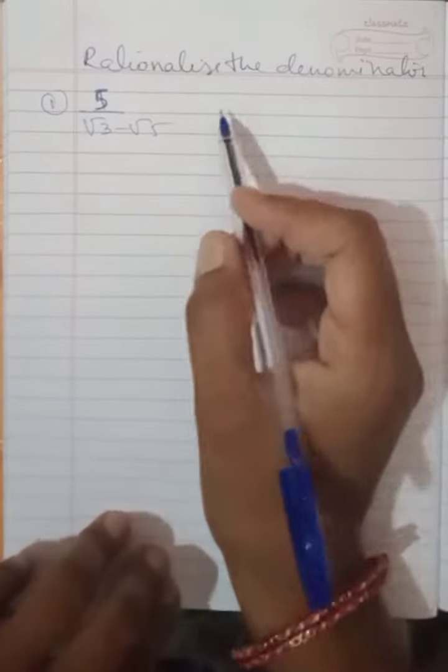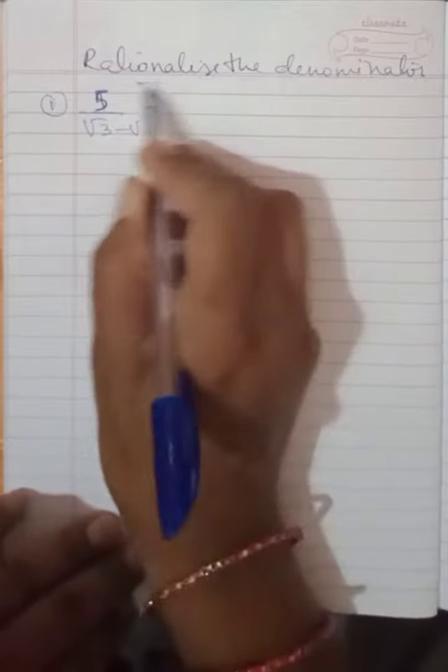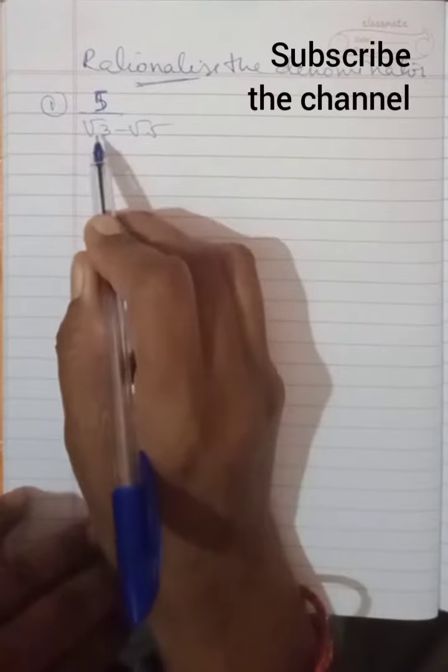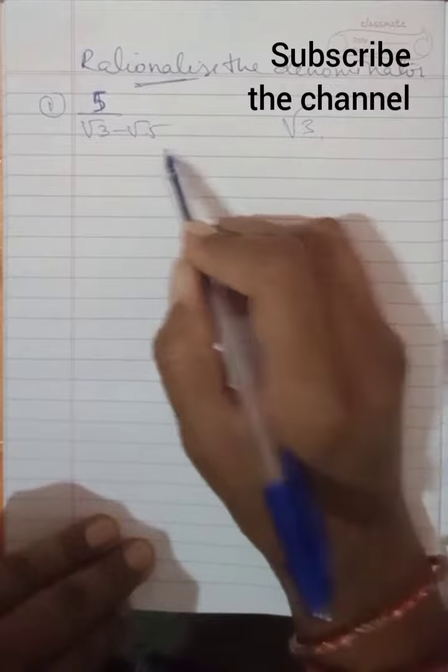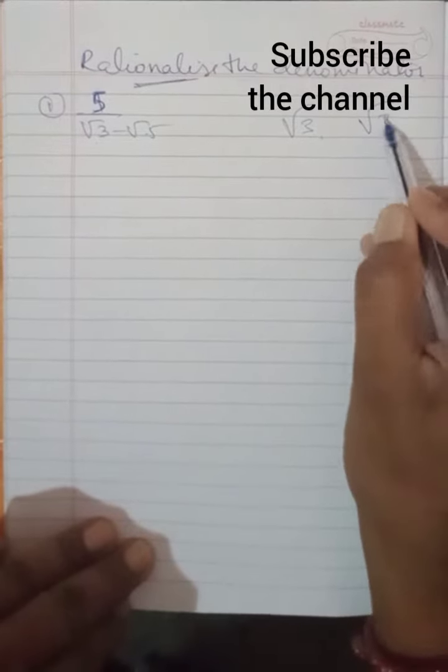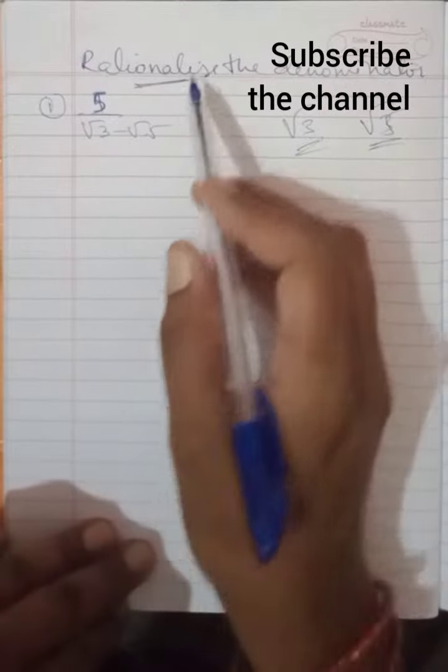This problem is about rationalizing the denominator. Rationalizing means you have to make this number rational. These are irrational numbers, root numbers, and these are not perfect square numbers. You have to convert this root 3 and root 5 in the denominator in terms of rationalized form, which means without the square root.